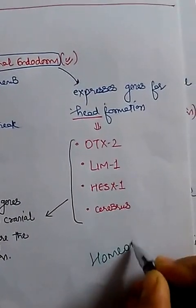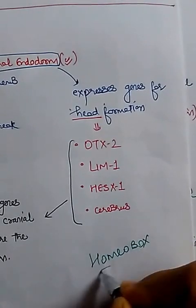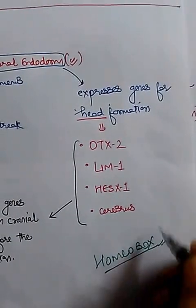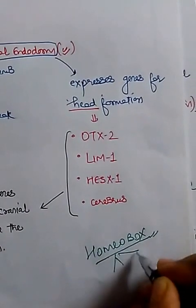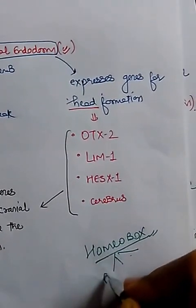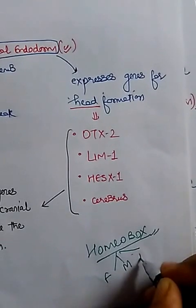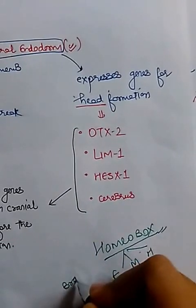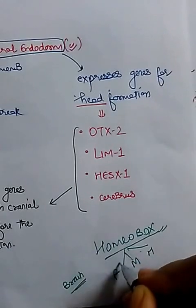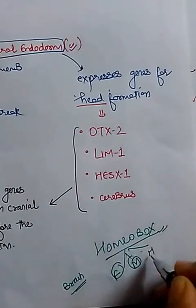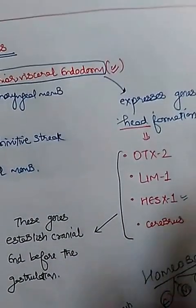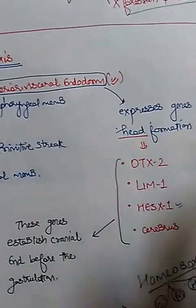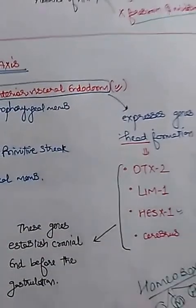Apart from these, we will study homeobox genes further during CNS development, because homeobox genes are responsible for separation of the forebrain, midbrain, and hindbrain — they determine which part forms each brain region. Even HESX1 is a type of homeobox gene, but we will discuss that later.